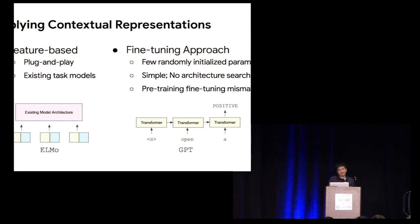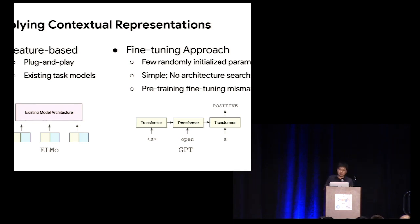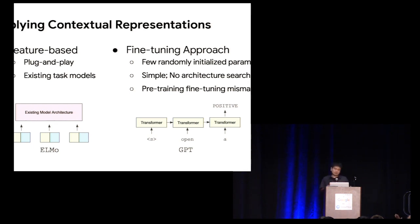However, because we only add a few new parameters, there could be a pre-training and fine-tuning mismatch. For GPT, we are using a language model as the downstream task model, but this model might not be the best choice for sequence tagging or for question-answering tasks.